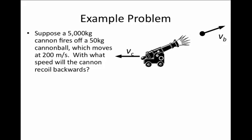We'll work now an example problem where we use the conservation of momentum. Let us suppose that a cannon which weighs 5,000 kilograms, or a little bit more than 11,000 pounds, fires off a cannonball which weighs 50 kilograms.